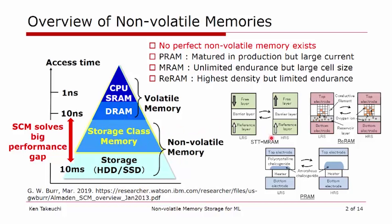MRAM is good in terms of reliability with unlimited endurance, but the cell size is still larger than DRAM. ReRAM is most promising in terms of capacity, but there is a huge variability and limited endurance. So if we think about endurance, reliability, cell size, and density, there is always a trade-off among them. Naturally, we should have a hierarchical structure of various kinds of memories.